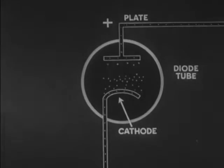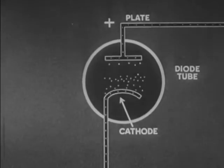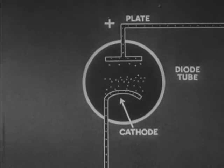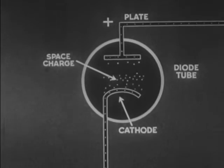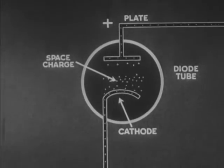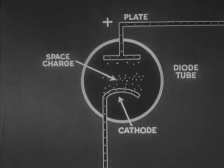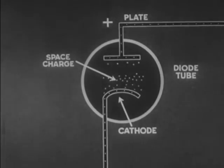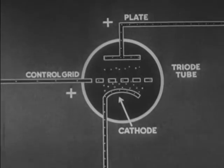In the diode tube, many electrons leaving the cathode move about between cathode and plate, constituting space charge. The triode tube differs from the diode in containing an element known as the control grid, located between cathode and plate.